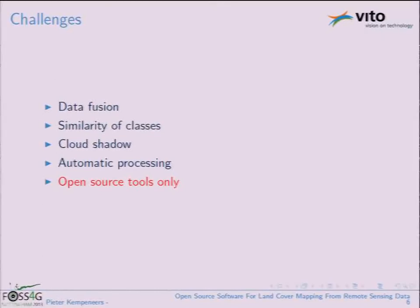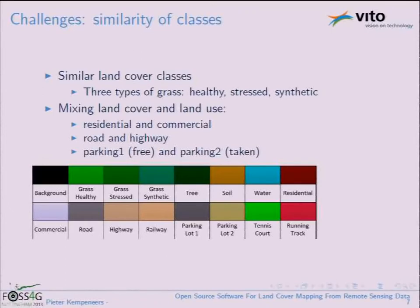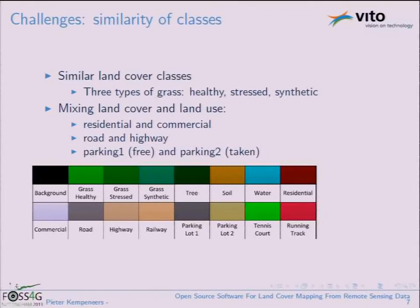The classification had to be fully automatic — no visual interpretation involved. An extra challenge I set for myself was solving it using only open source tools. On the similarity of classes: there were three grass classes — healthy grass, stressed grass, and synthetic grass. The synthetic grass was for a sports field; the stressed grass was the worn middle part. From the visual eye it's very difficult to distinguish those, but luckily the hyperspectral data is very capable of detecting those subtle differences.